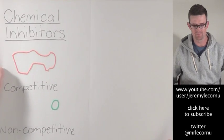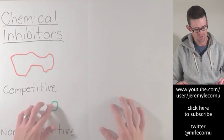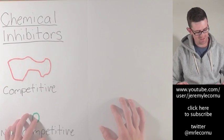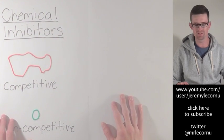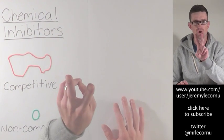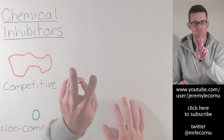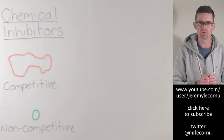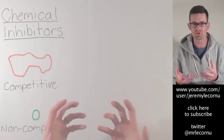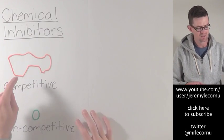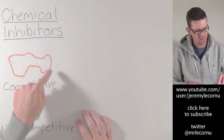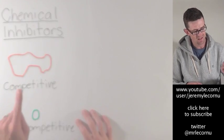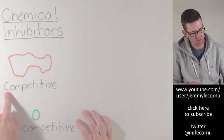Chemical inhibitors. Here we have two examples of chemical inhibitors because there are two types. Chemical inhibitors are chemical molecules similar to a substrate molecule. They have a chemical shape and structure, and there are two types.